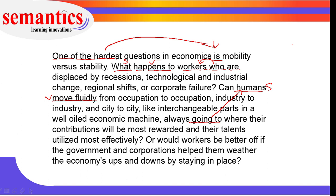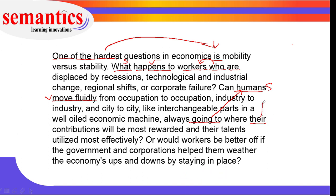Going to where? 'Their' is a pronoun — plural, referring to the word 'humans.' Their contribution will be most rewarded and their talent. 'Their' is again referring to humans. We observe the word 'and' here — 'and' indicates parallelism. Where their contributions will be most rewarded and their talents utilized most effectively — so it's parallelism here.